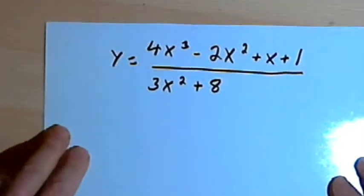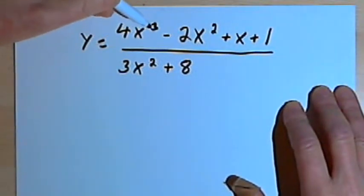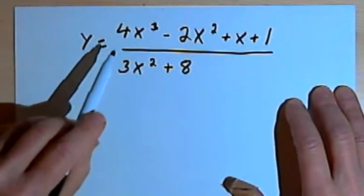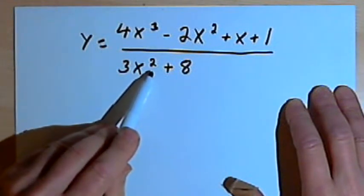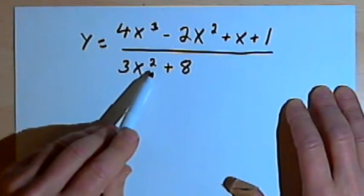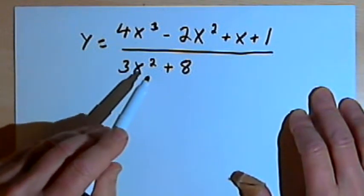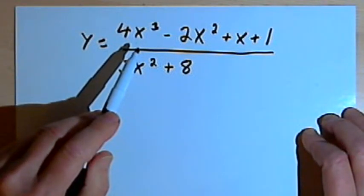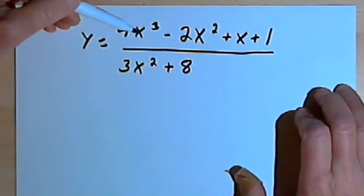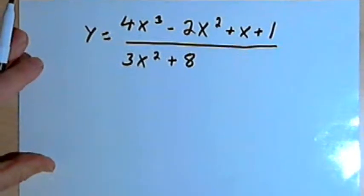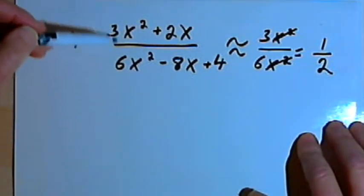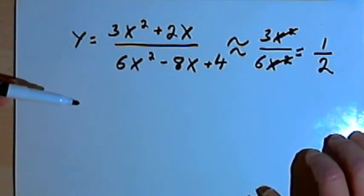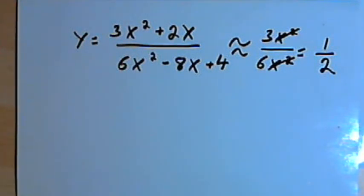I want to show you one example where this will not work: y equals 4x to the third minus 2x squared plus x plus 1 over 3x squared plus 8. Here the degree of the numerator, 3, is greater than the degree in the denominator, which is 2. This will not yield a horizontal asymptote — it's going to give you something called a slant asymptote or an oblique asymptote. I've got a video for that if you want to take a look. To summarize: if you've got the same degree in the numerator and denominator, you're looking at the ratio of the lead coefficients. If the degree in the numerator is less than the degree in the denominator, the horizontal asymptote will be y equals 0. I hope that helps — take care, I'll see you next time.